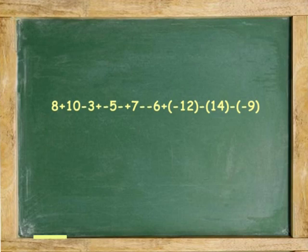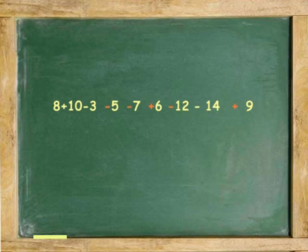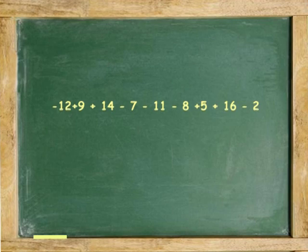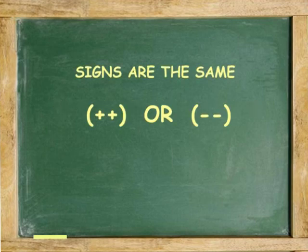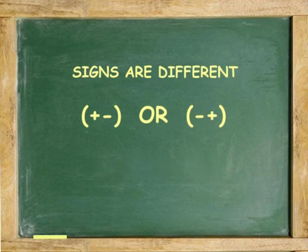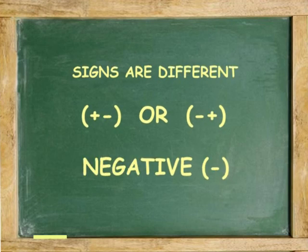By now, we realize that having two signs together is confusing. Therefore, we'll take a shortcut by converting all double signs into one. Using the following example, we remove double signs and all parentheses, leaving only numbers and one sign between numbers, using the following rules. If the signs are the same, turn both signs into one positive sign. If the signs are different, turn both signs into one negative sign. Same, positive. Different, negative.